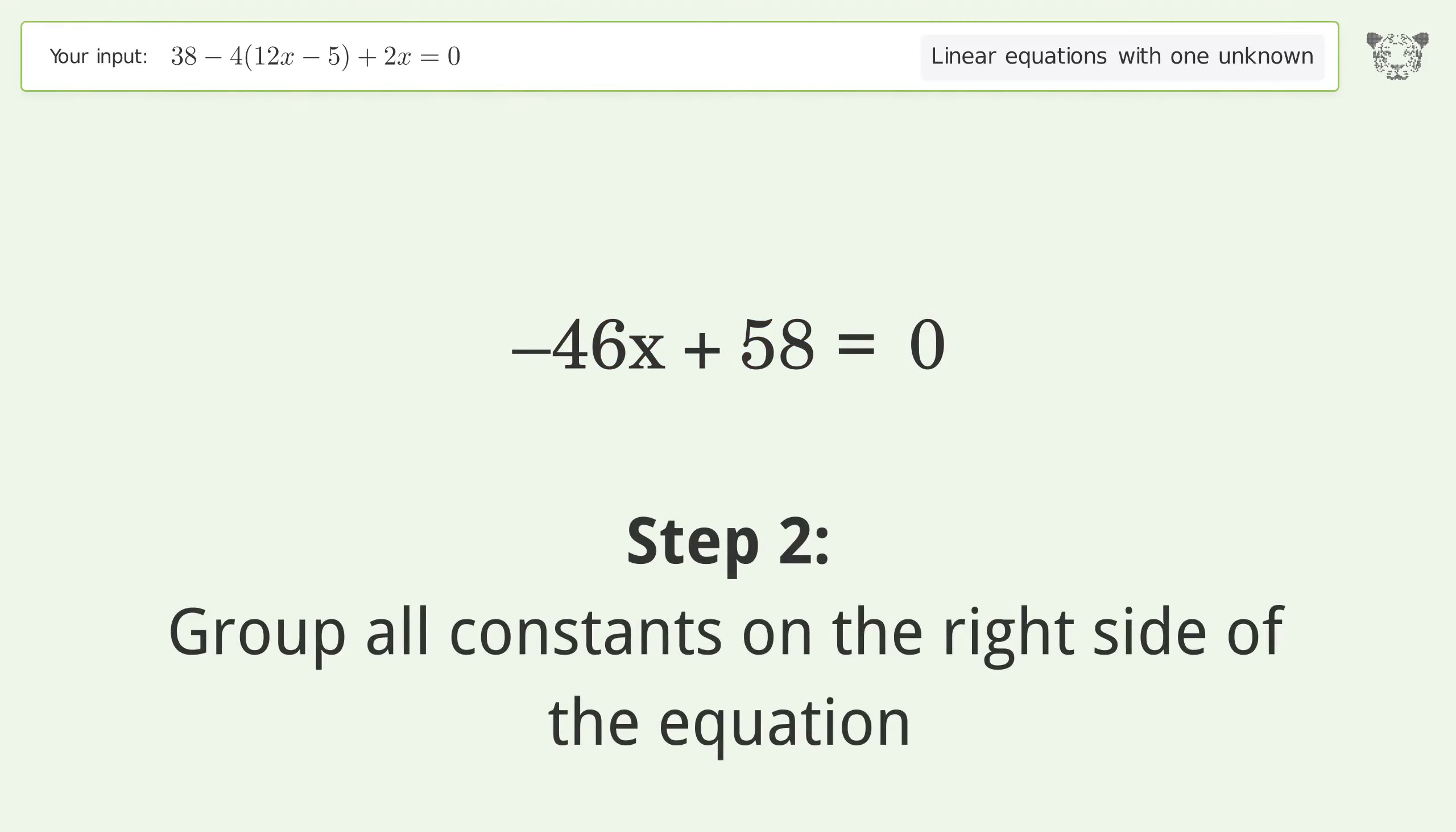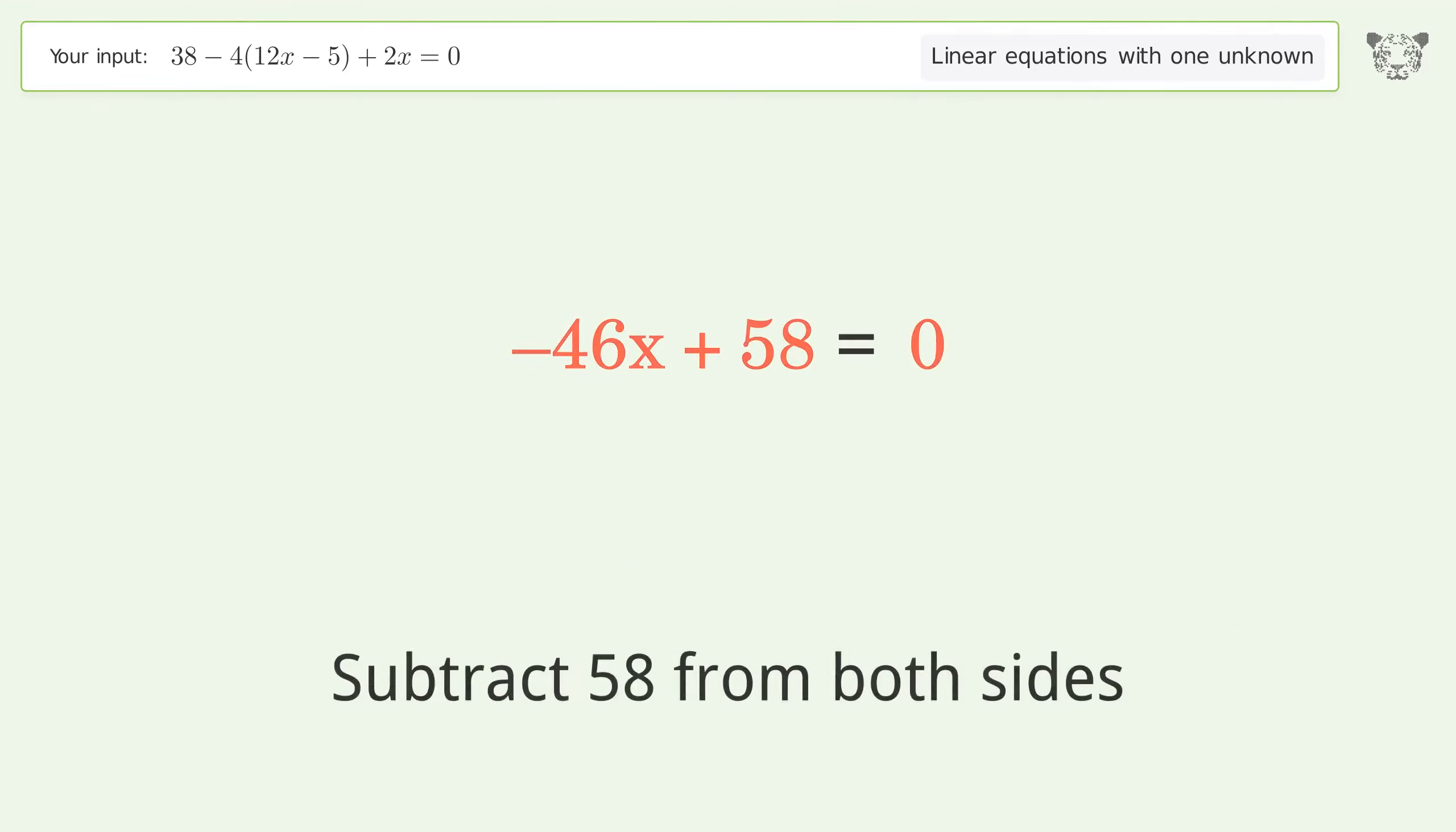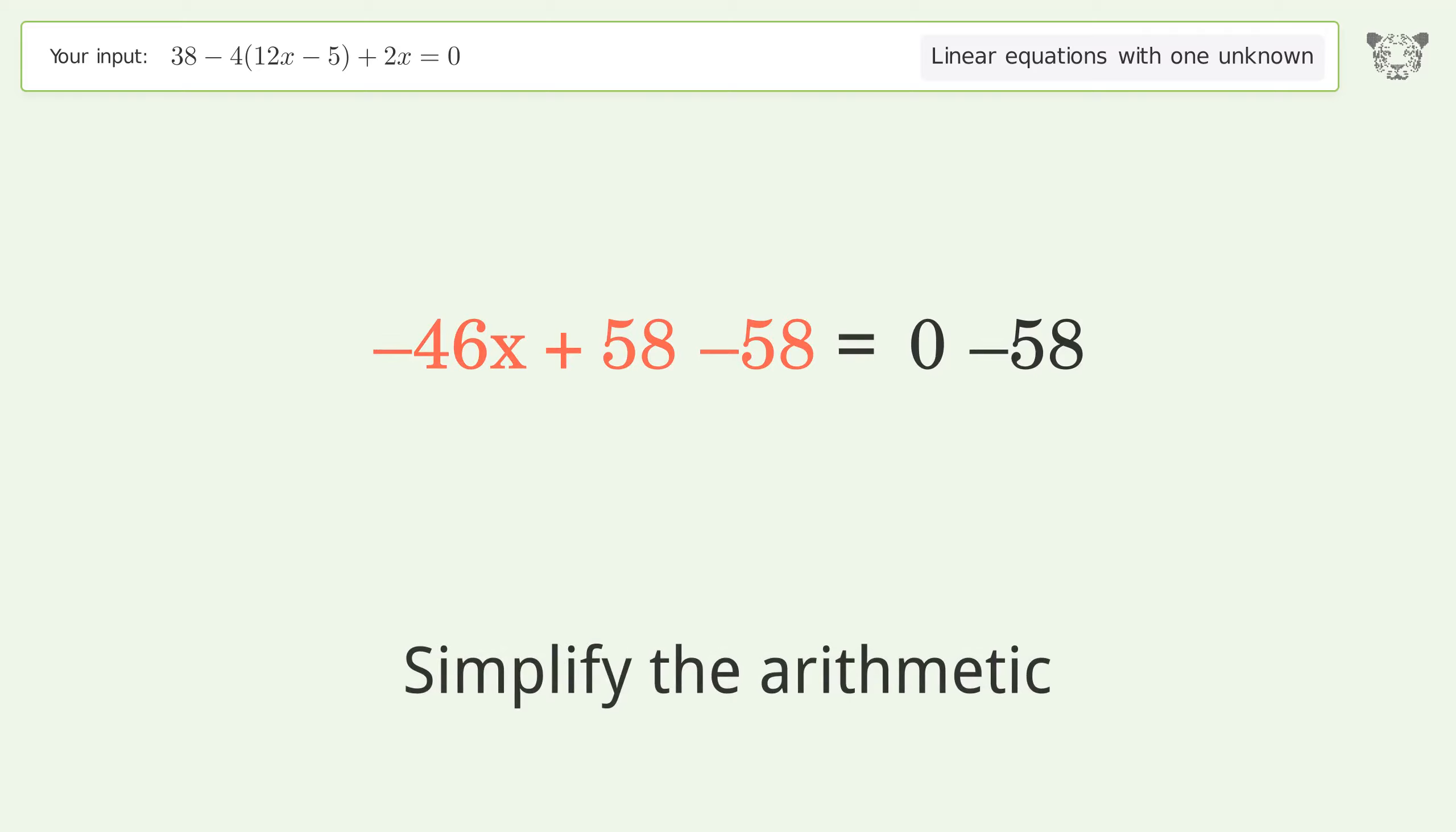Group all constants on the right side of the equation. Subtract 58 from both sides. Simplify the arithmetic.